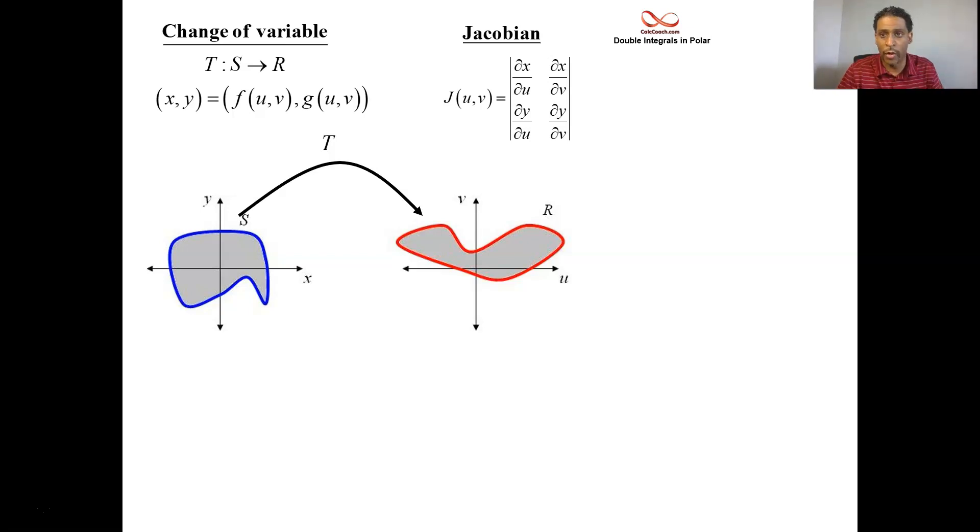2 by 2 determinant. So it's going to be the partial of X with respect to U times the partial of Y with respect to V minus the partial of X with respect to V times the partial of Y with respect to U. It's best just to set it up like that instead of memorizing the formula.